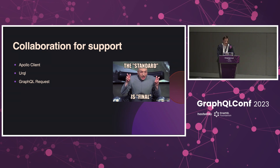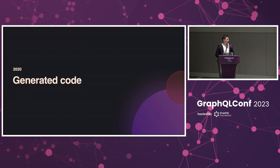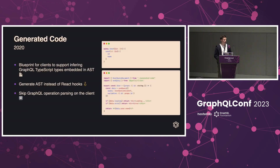We reached out to the most popular GraphQL clients — Apollo Client, Urql, and GraphQL Request — and achieved that all of them support this. For us, that meant we could sunset a lot of GraphQL plugins and instead all of them could use this new approach. This was roughly around 2020. We were still in the generated code phase, but instead of generating GraphQL hooks, we now generate typed AST, and all the libraries could infer those types from the AST object. An additional benefit is that we can skip the GraphQL operation parsing on the client — why should we ship a GraphQL parser to our frontend?